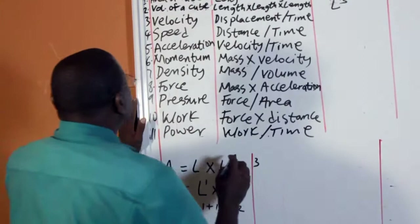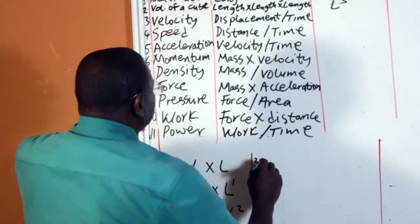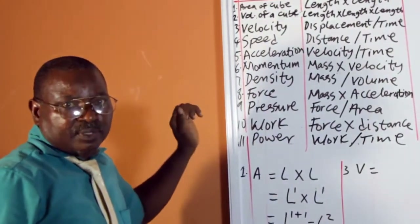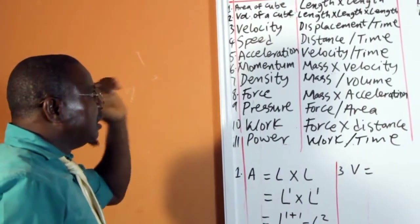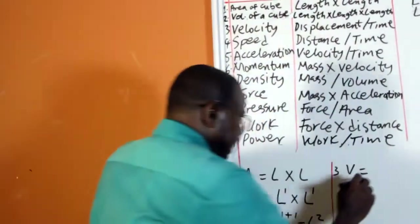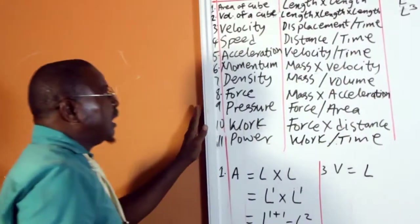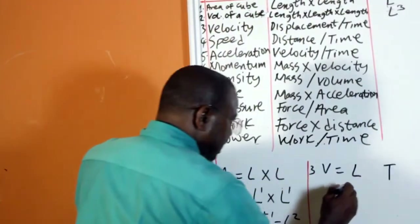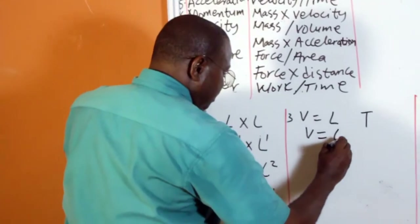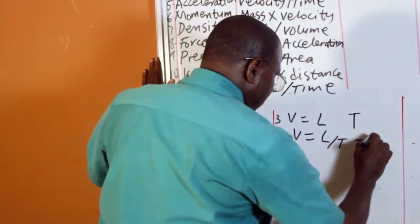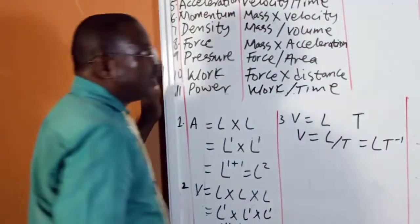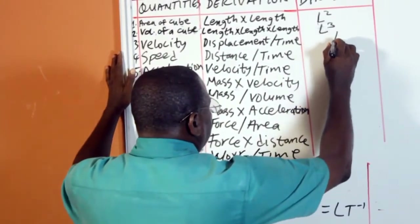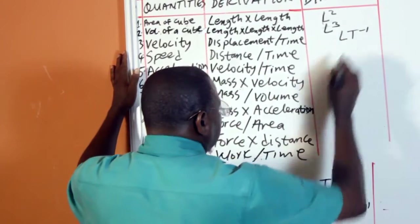Number 3 is velocity. Velocity is given by displacement over time. The symbol of displacement is L and that of time is T. So the formula is L over T, or LT raised to power minus 1. That is the dimension of velocity.